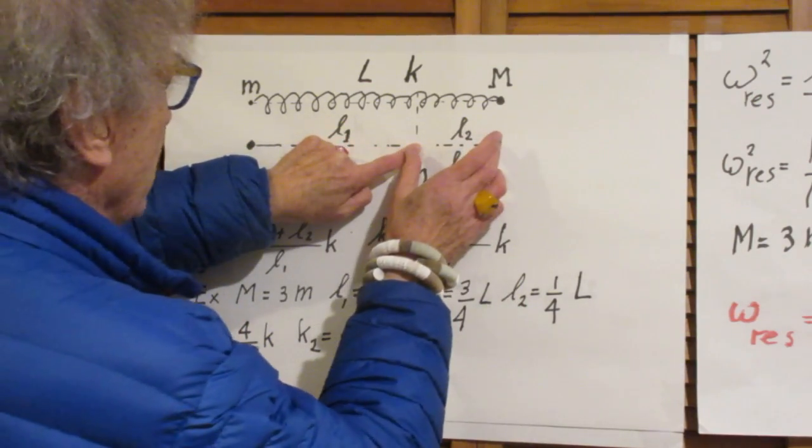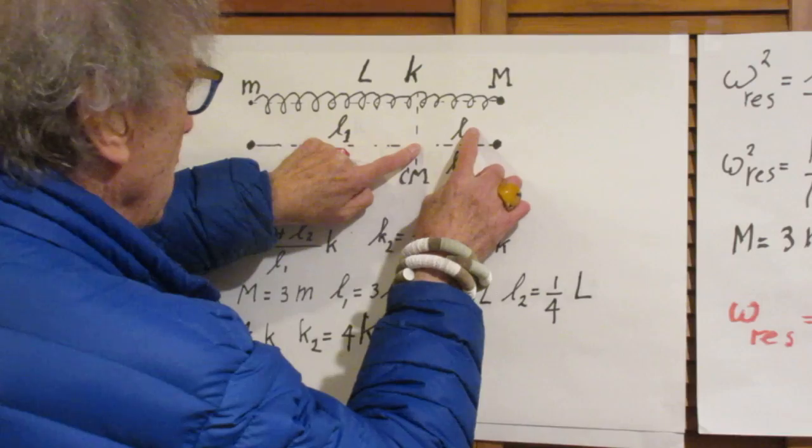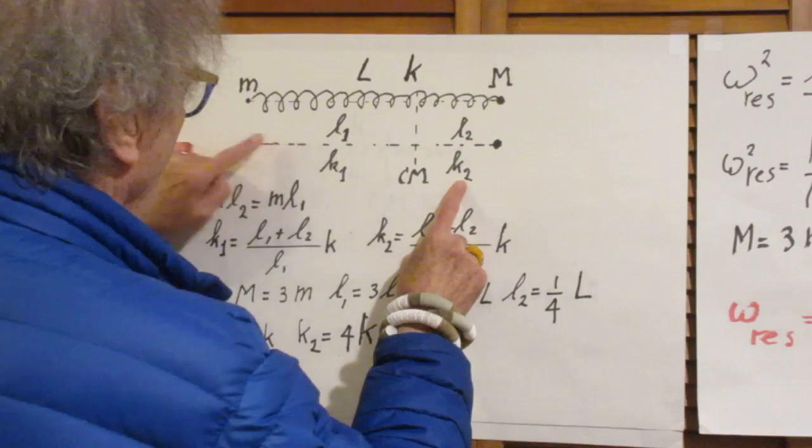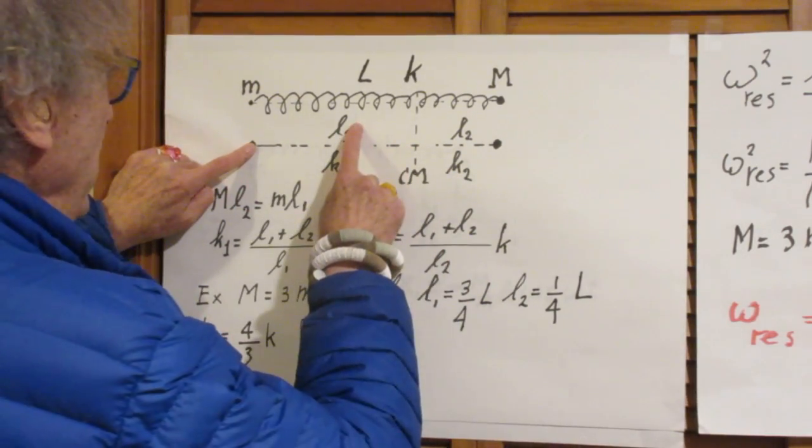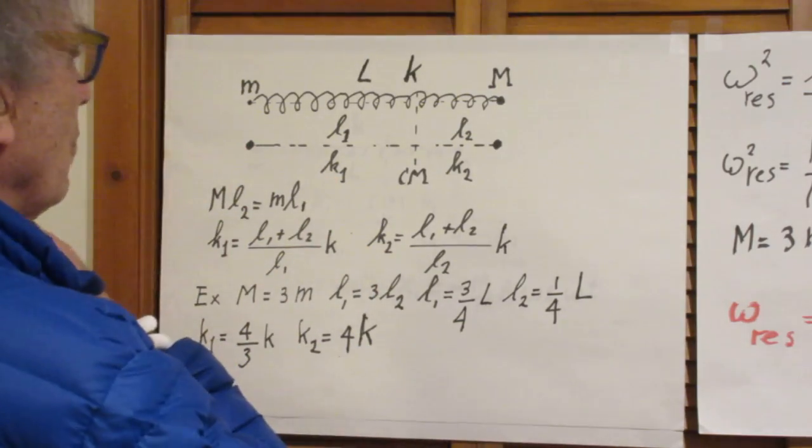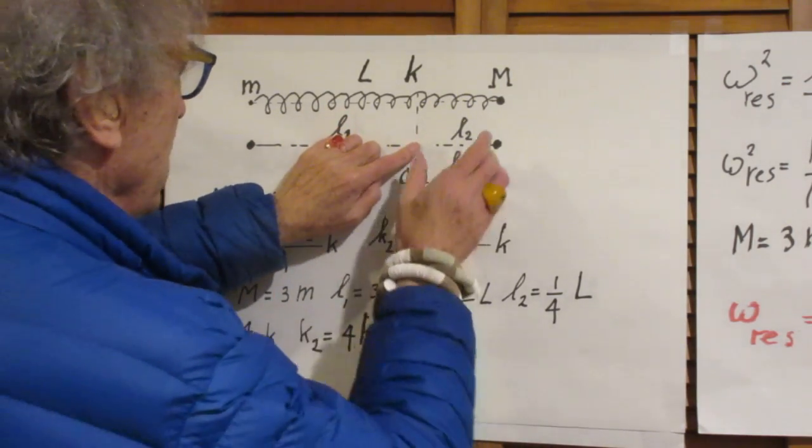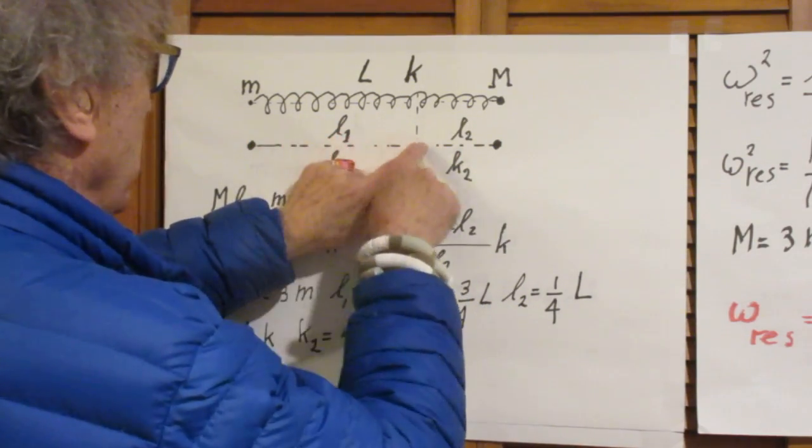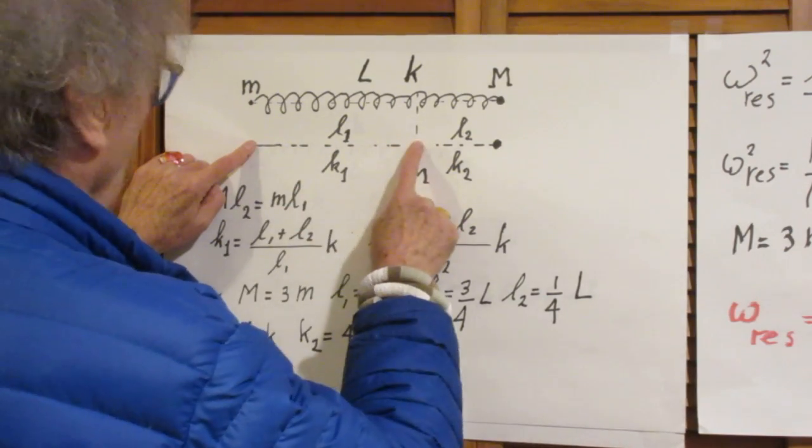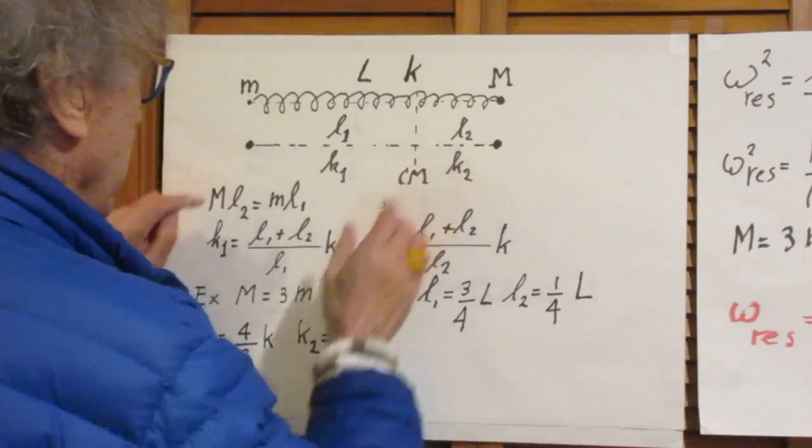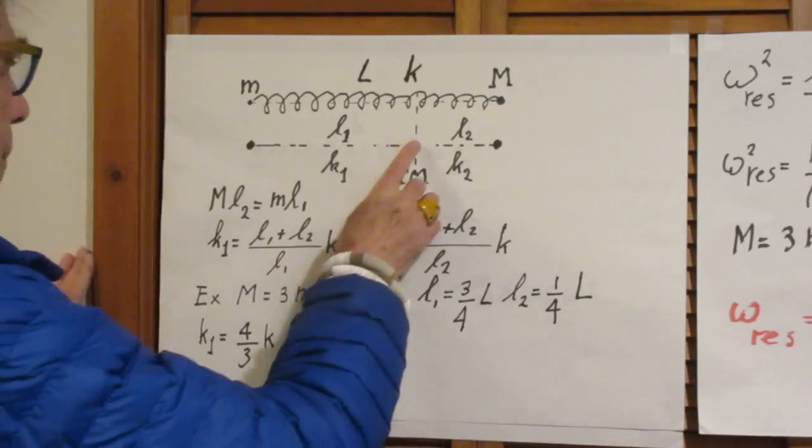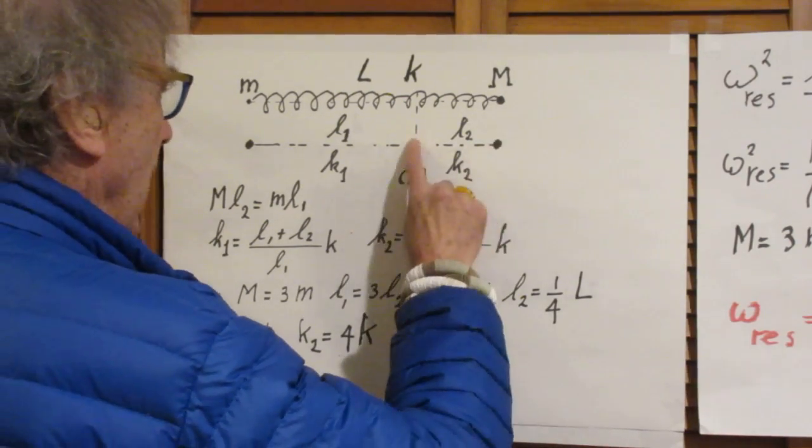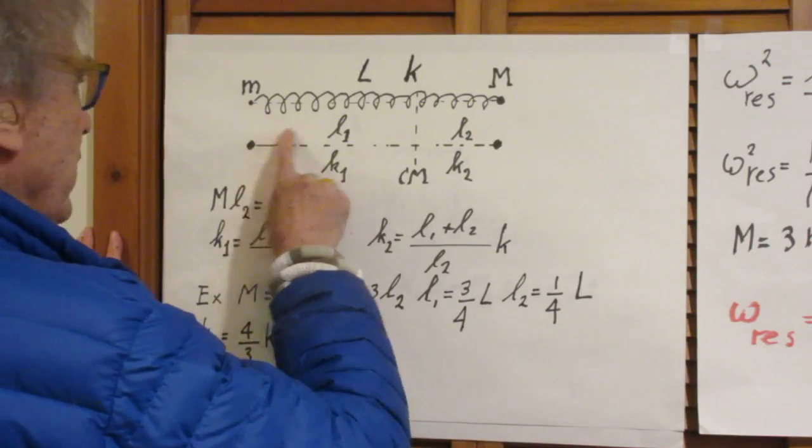So let us call the length of this spring L2 and the spring constant K2. And let us call the length of this spring then L1 and the spring constant K1. Clearly, if there is a nail in here, this spring acts all by itself. It wouldn't even know that there is a spring here. And this spring acts all by itself. Now, the center of mass, I hope you will remember that, would be that capital M times L2 is little m times L1.